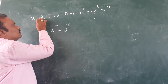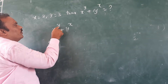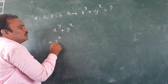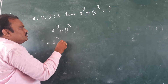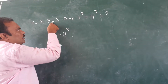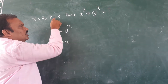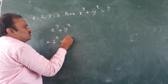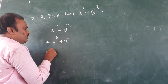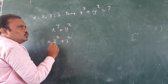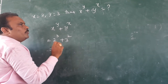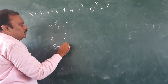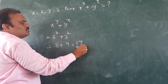Putting x equal to 2 and y equal to 3, we get 2 power 3 plus 3 power 2. That means 2 cube is 2 into 2 into 2, which equals 8. Plus 3 square, which is 9. So the answer is 17.